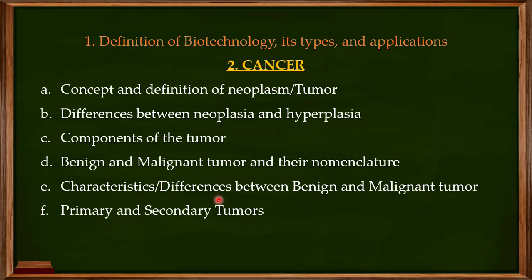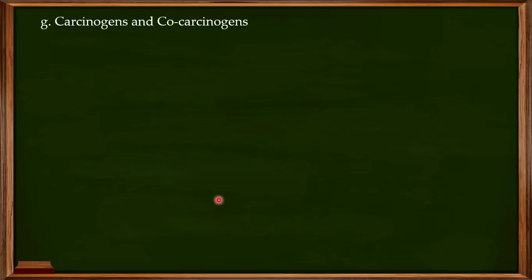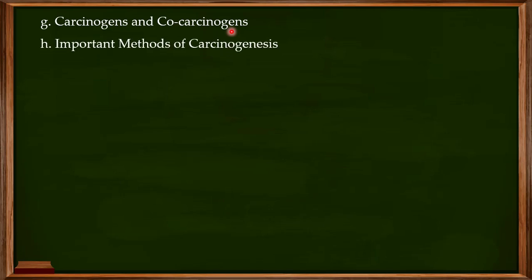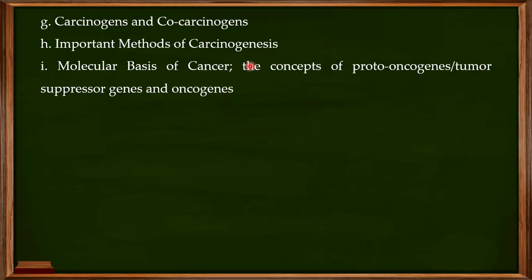Our focus will then be on primary and secondary tumors. After that, we will focus on carcinogens and co-carcinogens — the agents responsible for causing cancer in living organisms. We'll then cover the important concept of carcinogenesis, which is the phenomenon of how cancer cells are formed, with carcinogens and co-carcinogens being the agents responsible for this process.